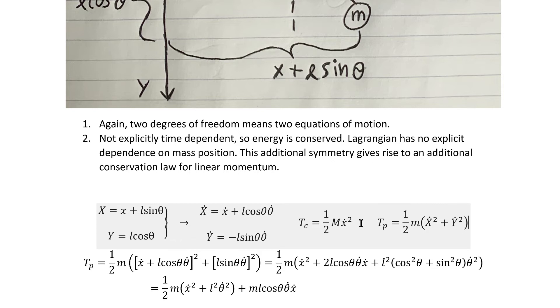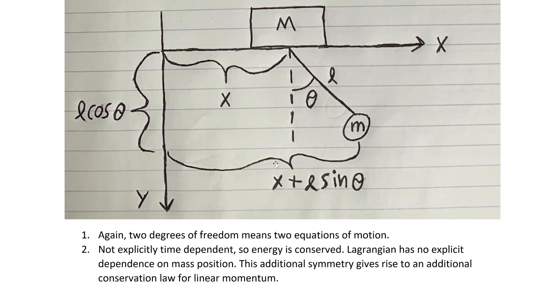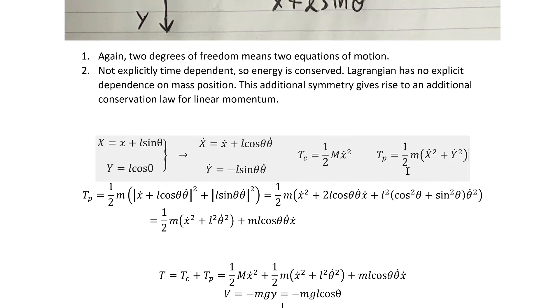So the first step is to write out the Lagrangian. To do that, we need the kinetic energy of the system. The kinetic energy of the block is quite straightforward to write out because it only engages in linear motion. The kinetic energy of the pendulum is a little more complicated. We start with the expression in terms of the linear components of motion, and then we use trigonometry, which I've written out on this diagram here, to express that kinetic energy in terms of the generalized coordinates that we selected.